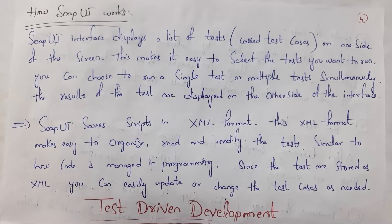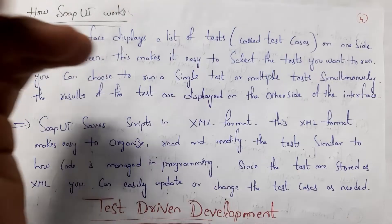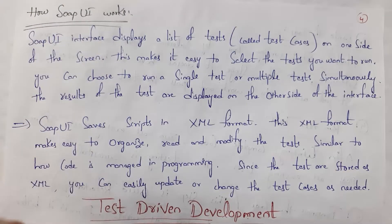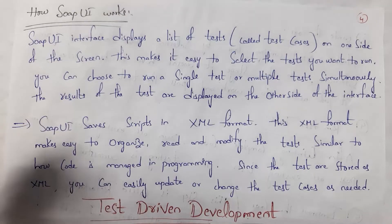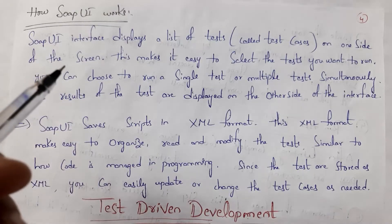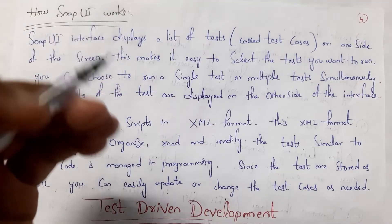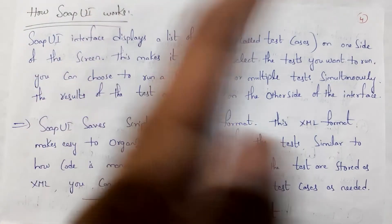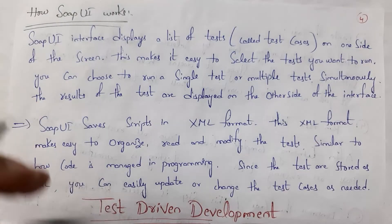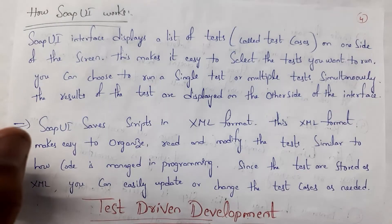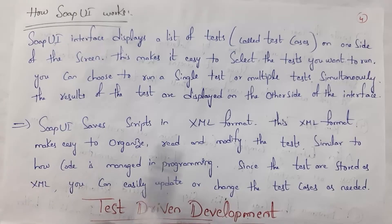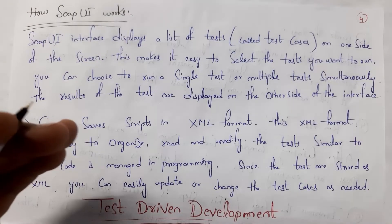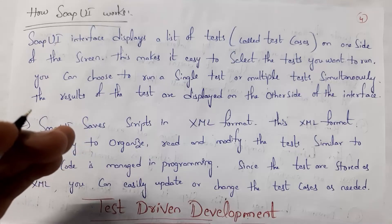This is how SOAP UI works. Whenever you open the SOAP UI software, on one side you can see all kinds of tests. You can directly select whichever test you want to perform — either a single test or multiple tests. Whenever you click the run button, the tests are performed and you can see the results on the other side. Whatever test you want to perform, you select it and write the script in XML format. XML is very easy to read, modify, and organize, and you can modify the XML script at any time.